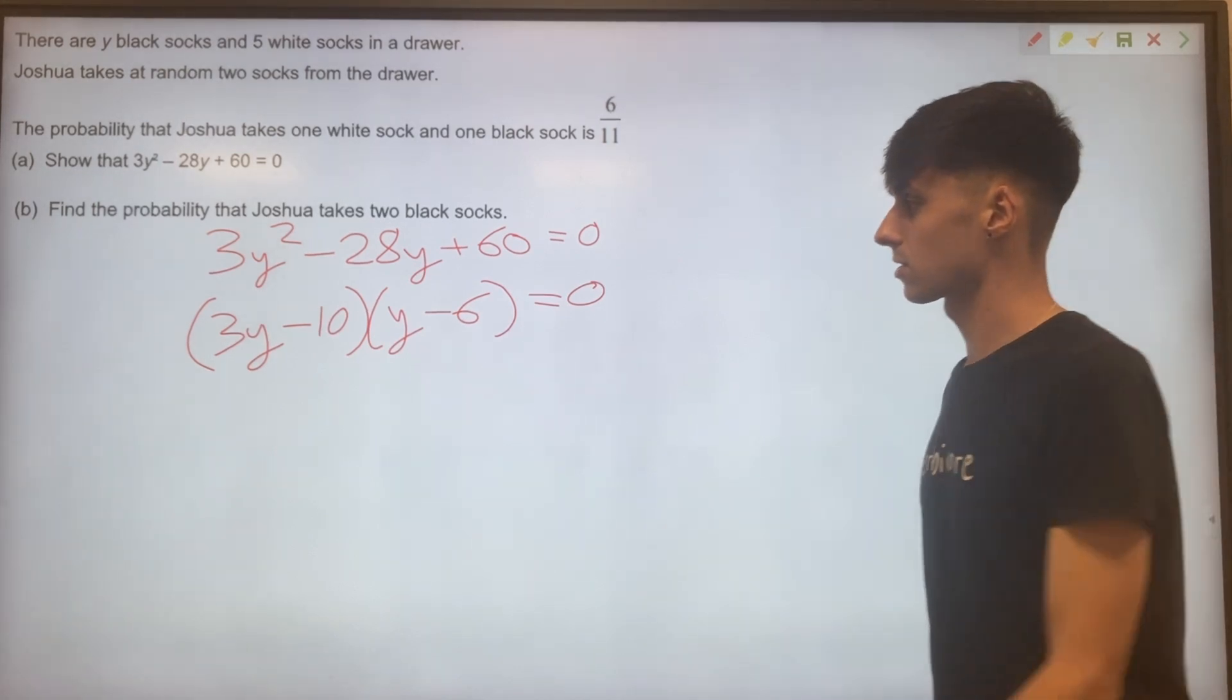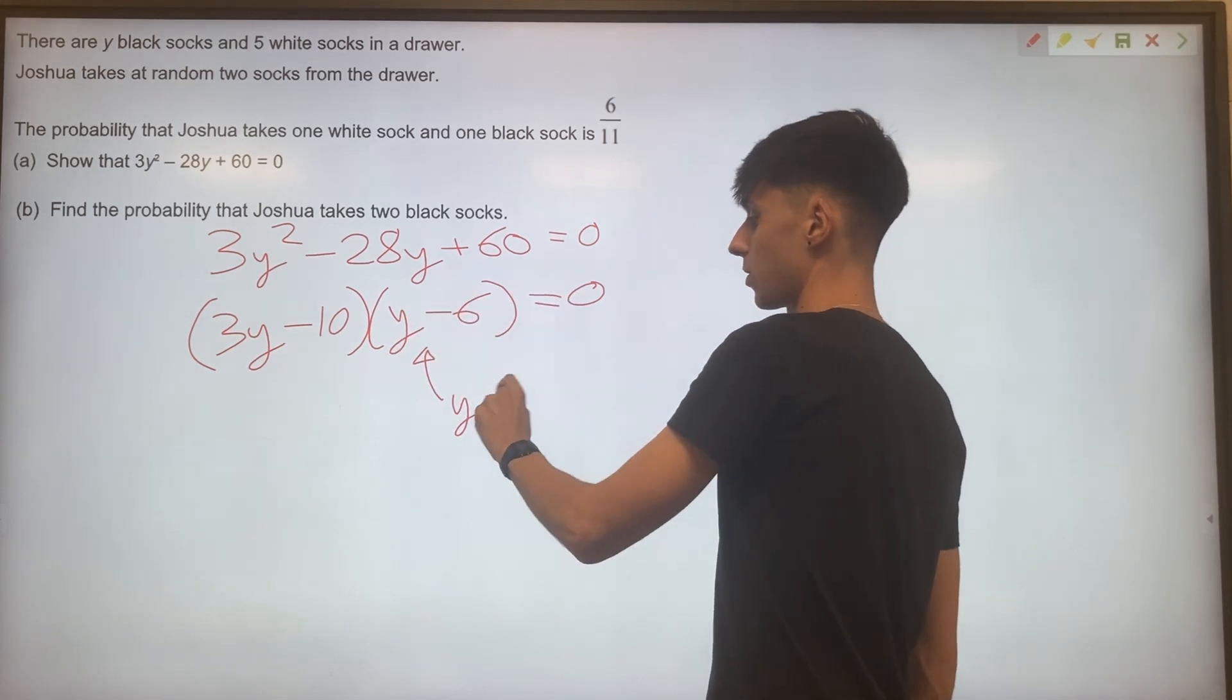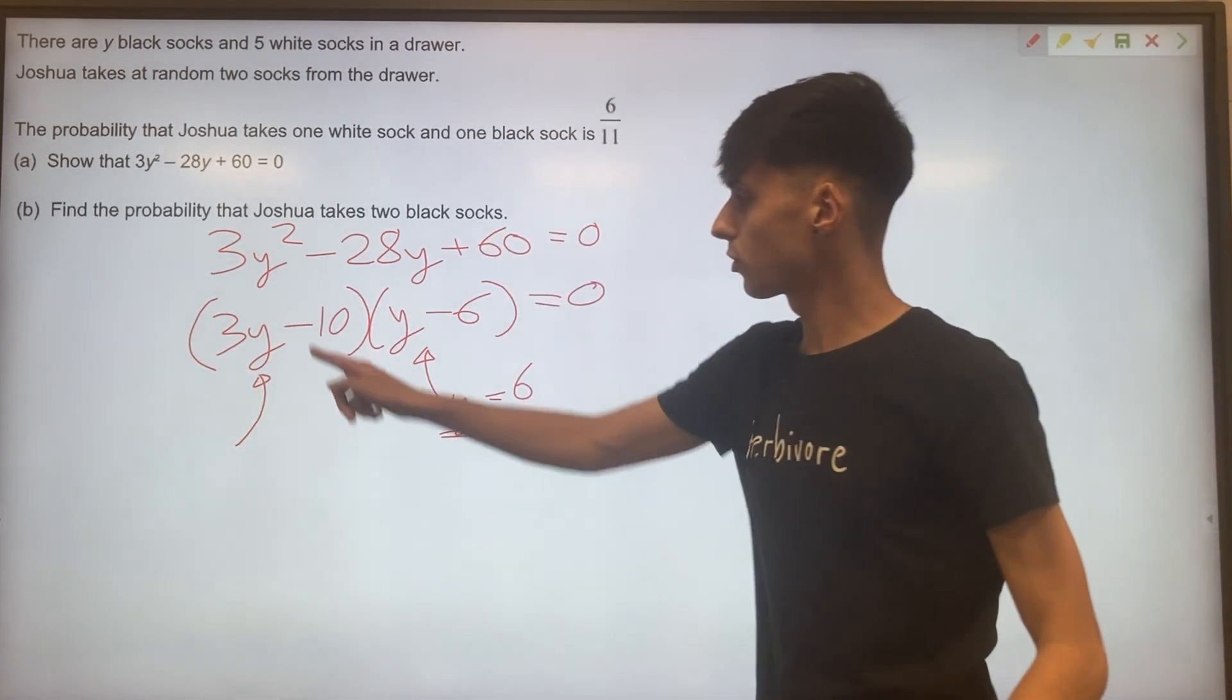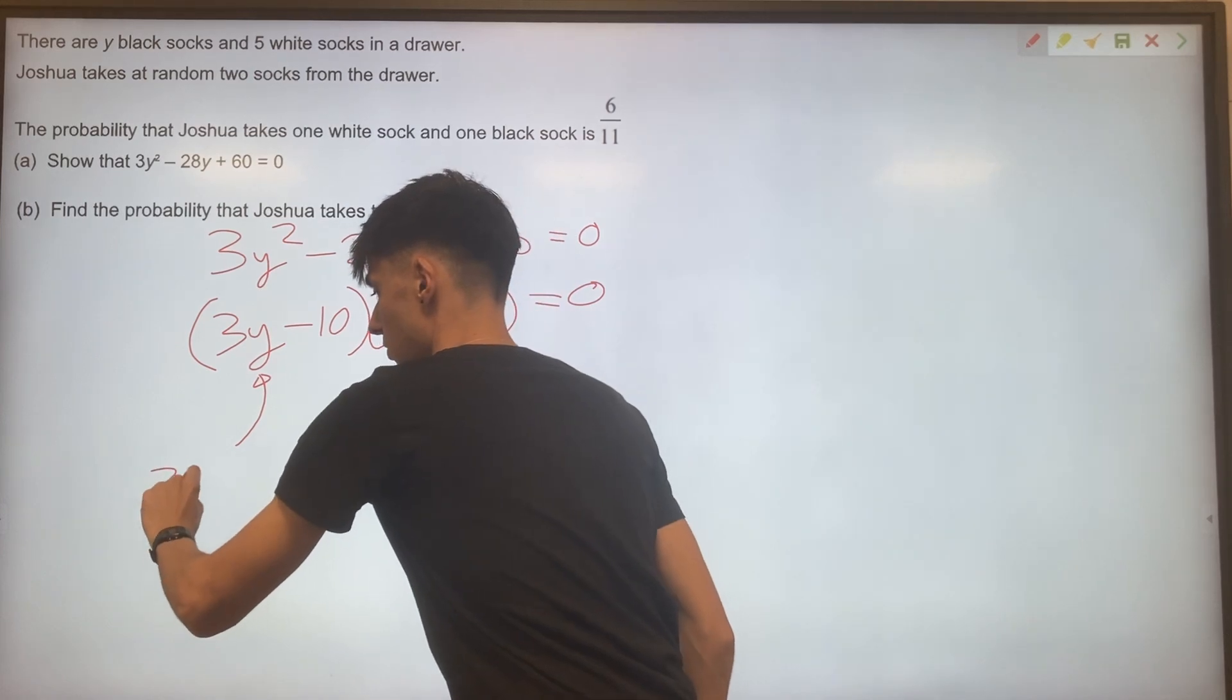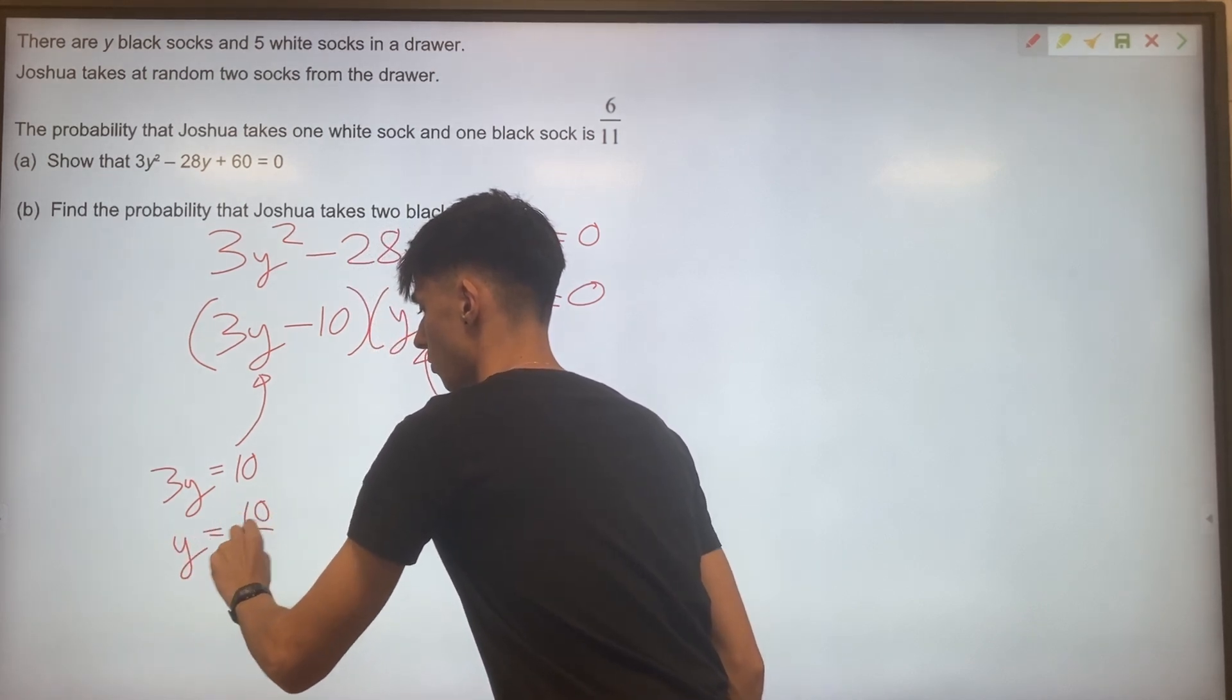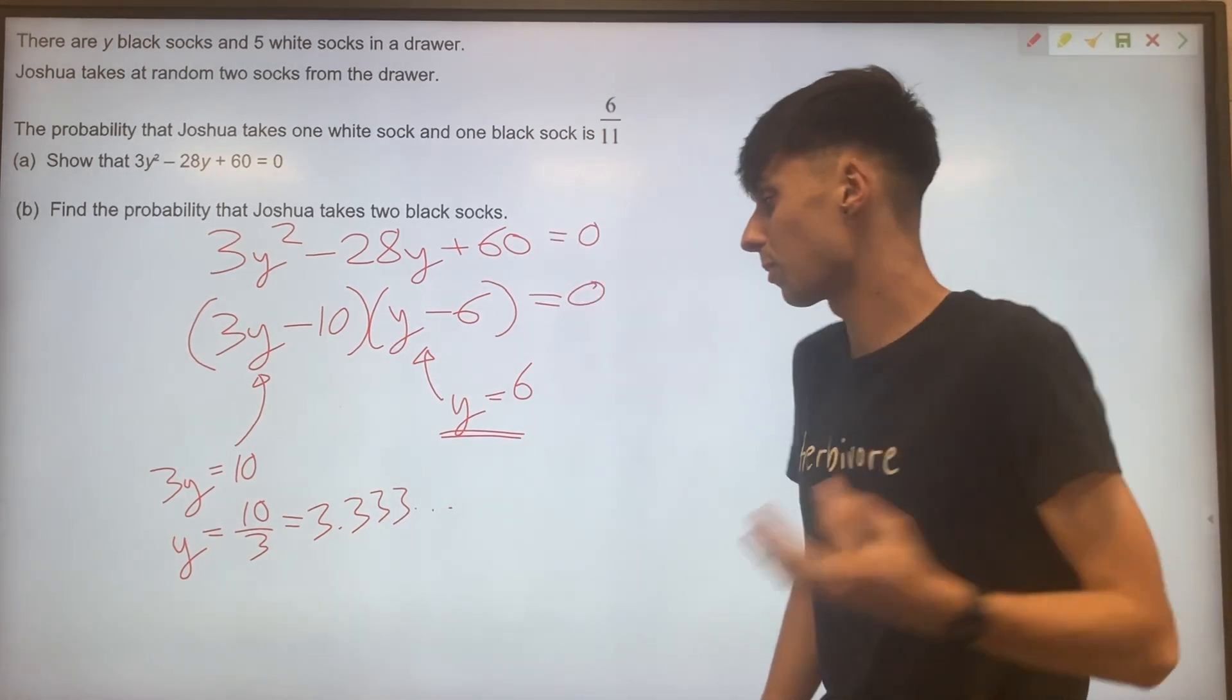Then solving these, let's do this bracket first because it's a bit easier. If y minus 6 is 0, then y has to be 6. OK. For this one, if 3y take away 10 equals 0, that means 3y equals 10. And then dividing by 3, y equals 10 over 3 or 3.333 dot dot dot. 3.3 recurring.